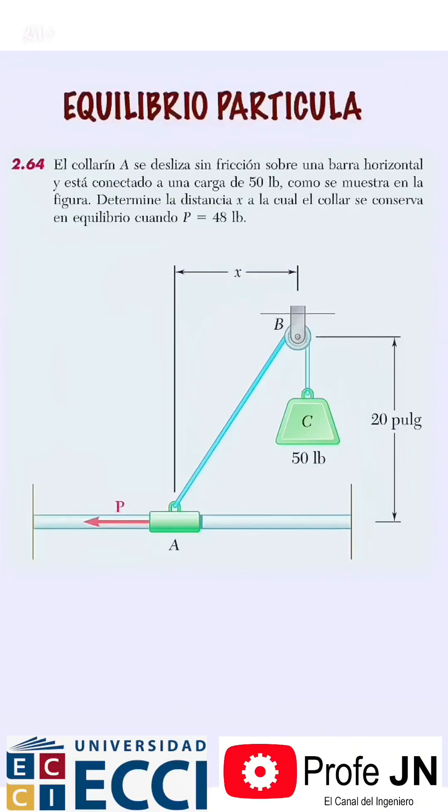As always, first step: free body diagram. This is on the collar, which is where all the forces converge. There is the tension of my rope which pulls upward, the normal force that has to be downward to counteract this, and the load on the collar of 48 pounds. Notice that there are only three forces.